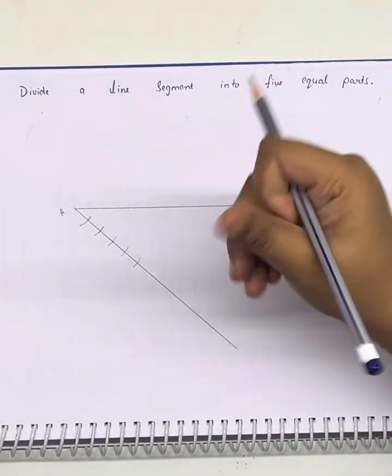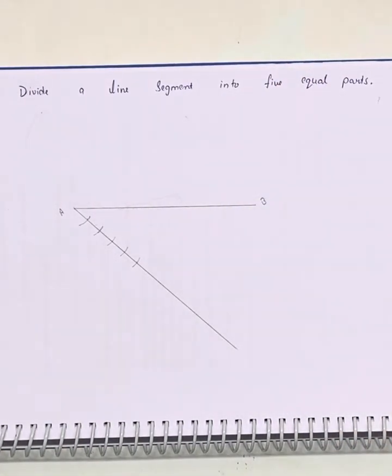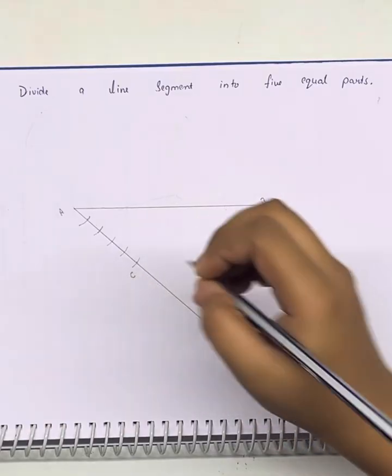Now we will join this point. Let's call it C with B.